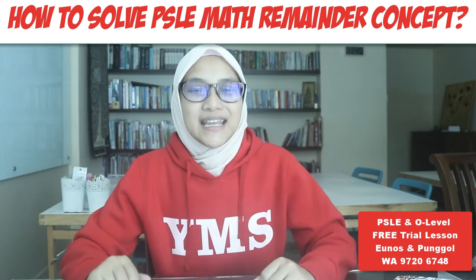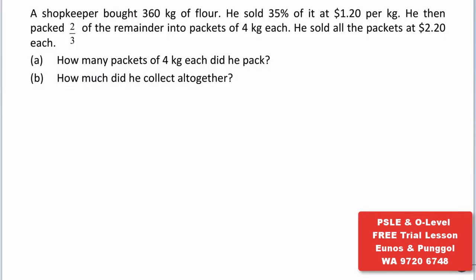If you're ready, let's take a look at a question. A shopkeeper bought 360 kilograms of flour. He sold 35% of it at $1.20 per kilogram. He then packed two-thirds of the remainder into packets of 4 kilograms each. He sold all the packets at $2.20 each. How many packets of 4 kilograms each did he pack, and how much did he collect altogether?